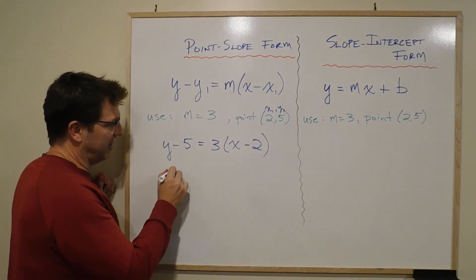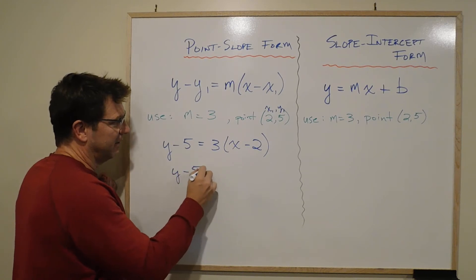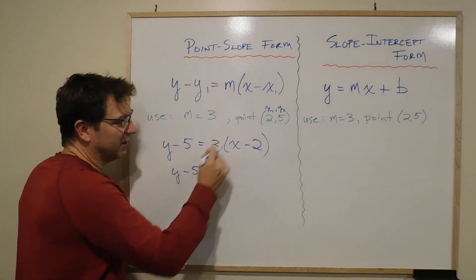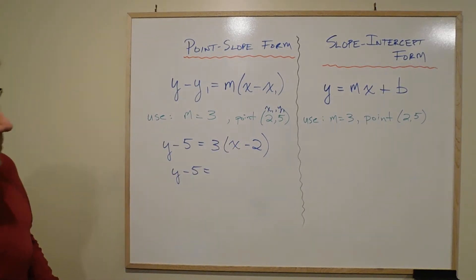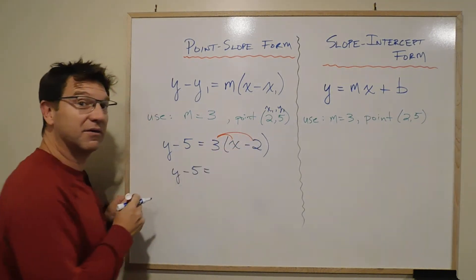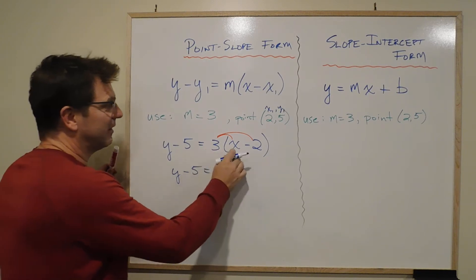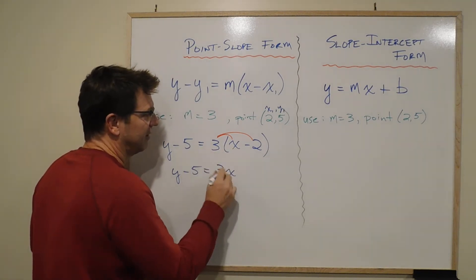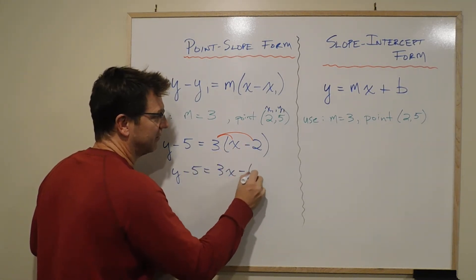Well, now y minus 5. We need to use the distributive law, right? And remember the distributive law. We're going to multiply this and multiply that in, right? Distributive law. 3 times x is 3x.